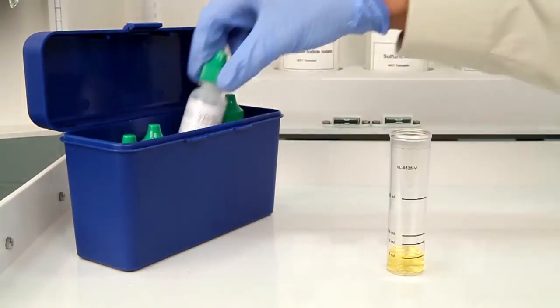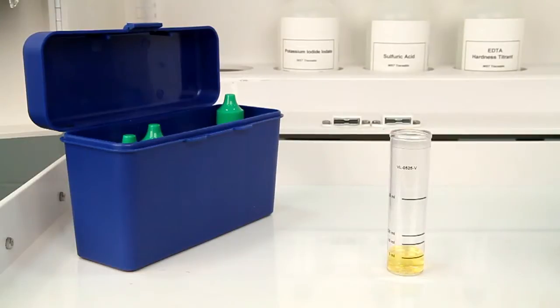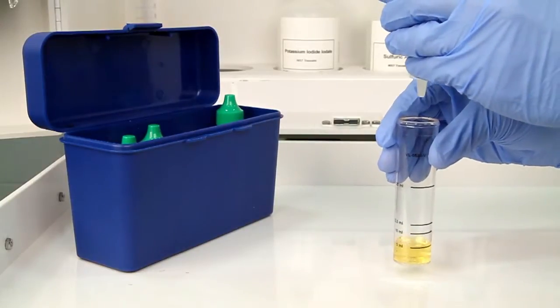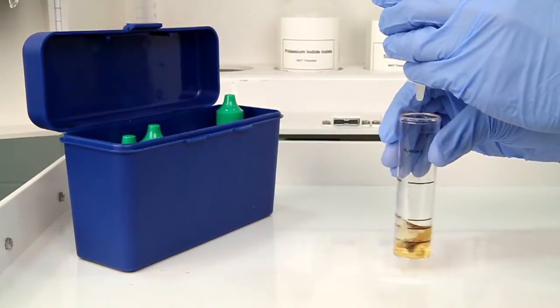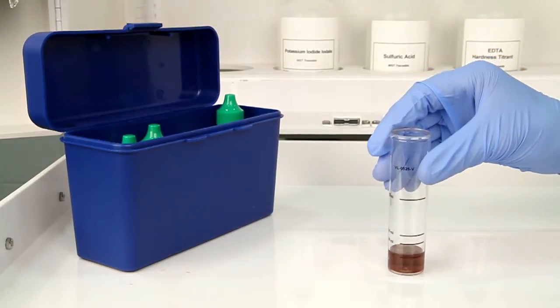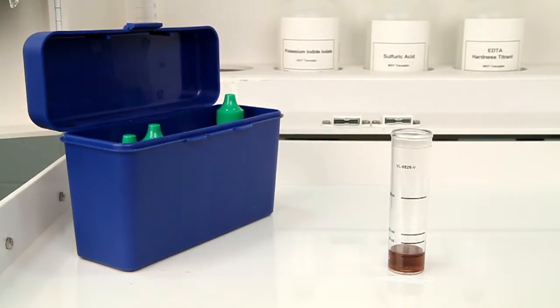The next step is to add 2 drops of starch indicator solution 0.5%. The bottle contains a dropper tip, so it's important to hold the bottle vertically to get a consistent drop size. After the addition of each reagent, swirl the vial to make sure the reagents are properly mixed. The sample should turn a blue-black color.